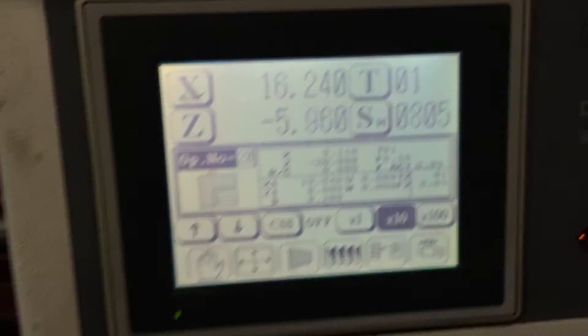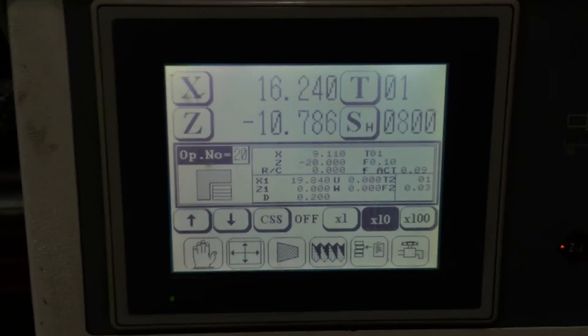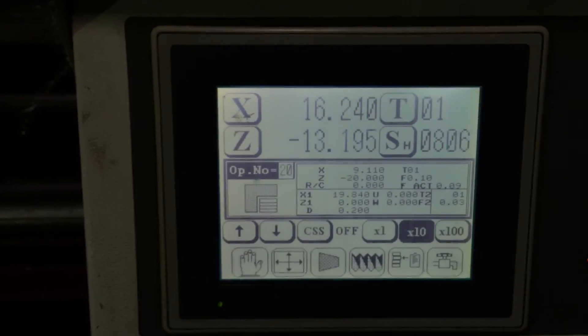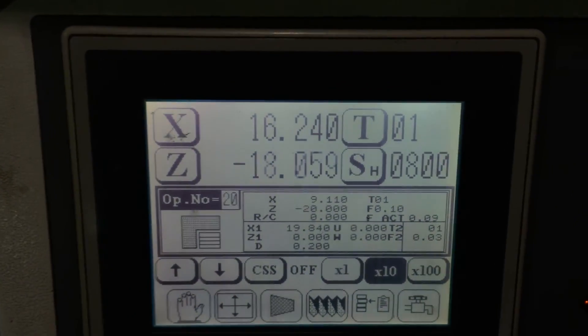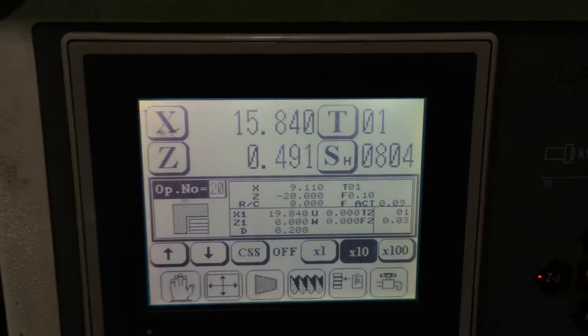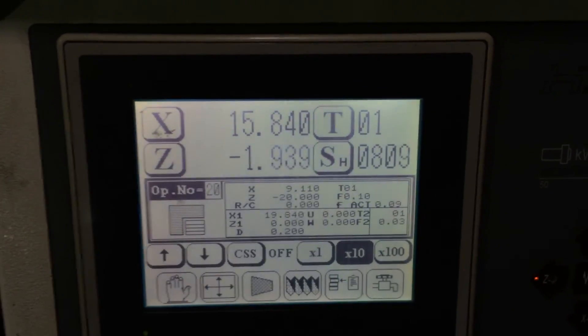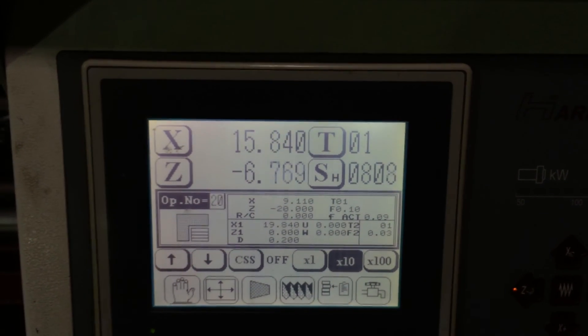There is another function in here that we can set up - constant surface speed. What happens with the constant surface speed is that each time the tool goes in to take another depth cut, the spindle speed will increase, which will keep the cutting surface speed consistent for the entire duration of the job.